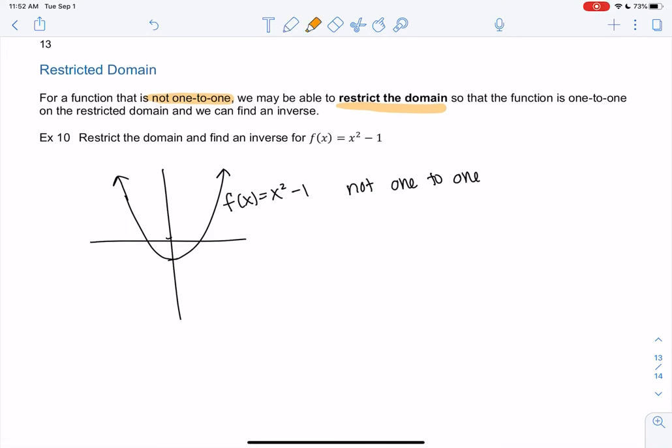I'm going to maybe only use half of the graph. I think the most common thing is probably to use the positive side. So I'm going to restrict the domain to only the positive side. So to x greater than or equal to 0.